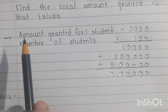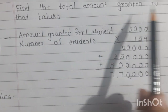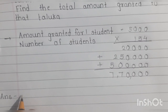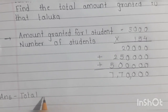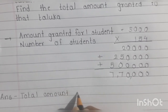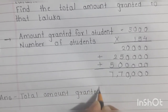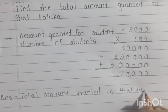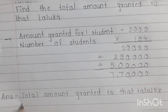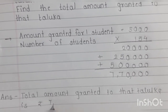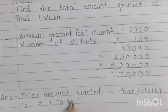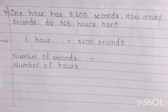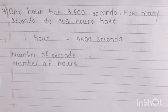How will you write your final answer? They asked: find the total amount granted to that taluka. So total amount granted to that taluka is rupees seven lakh seventy thousand.